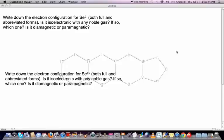Let's look at a couple of examples of electron configurations of ion-type questions. The first one is: write down the electron configuration of Se2-, both full and abbreviated forms. Is it isoelectronic with any noble gas? If so, which one? Is it diamagnetic or paramagnetic?